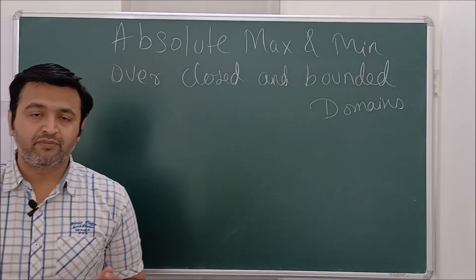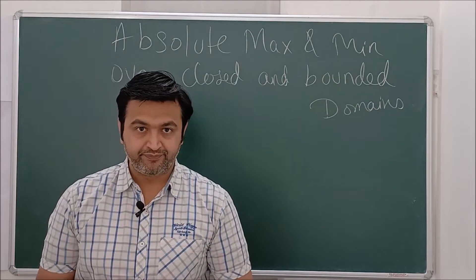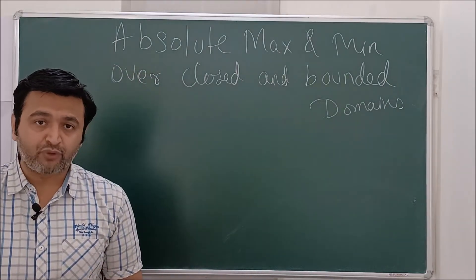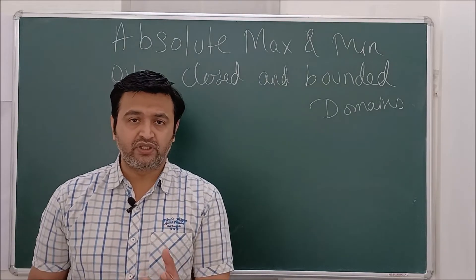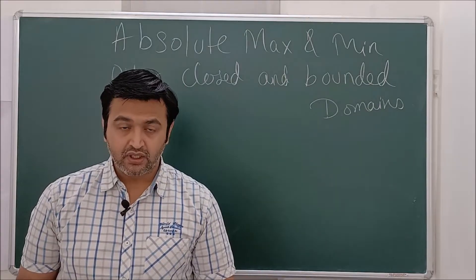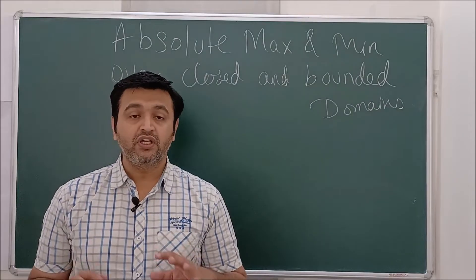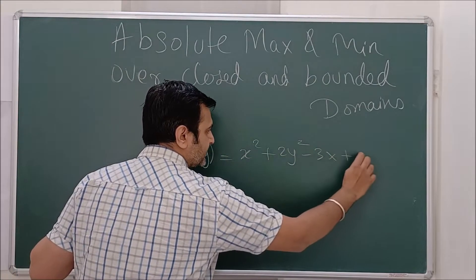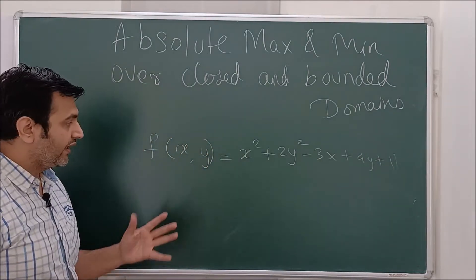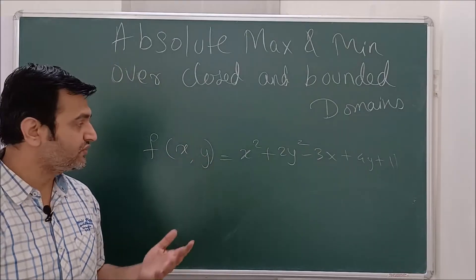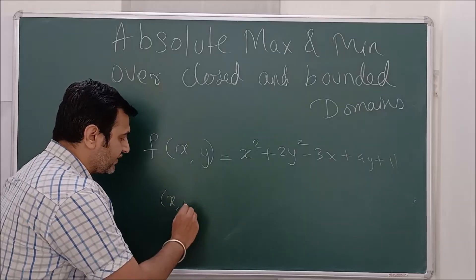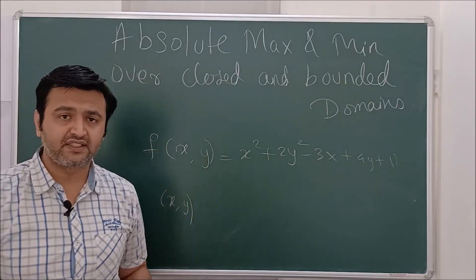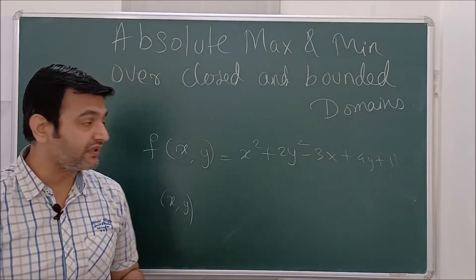In an earlier lecture we talked about the concepts of local maxima, local minima, and the saddle point for two variables, three variables, and higher. We saw that once you have a point where the partials are zero, how to determine whether that point is a local maxima, local minima, or a saddle point — using the Hessian matrix. For example, given f(x,y) = x² + 2y² − 3x + 4y + 11, you want to find the points where the function takes its maximum or minimum value. In that earlier setting, there was no restriction on x and y.